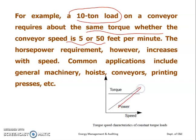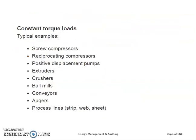The horsepower requirement will increase with speed — power increases with speed while torque remains constant. Basic examples include hoists, conveyors, and printing processes. Other examples of constant torque loads are screw compressors, reciprocating compressors, positive displacement pumps, crushers, ball mills, process line strips, web and sheet, and extruders.